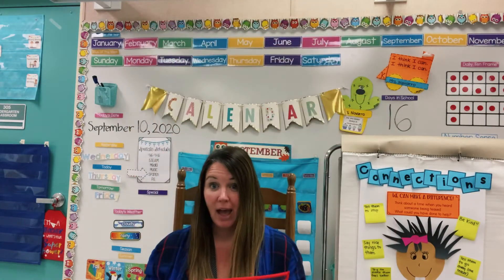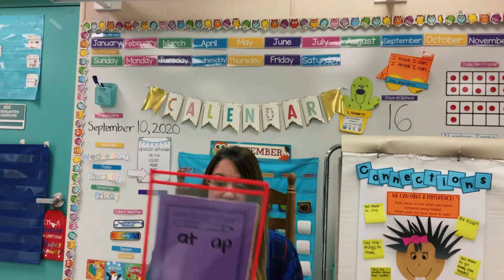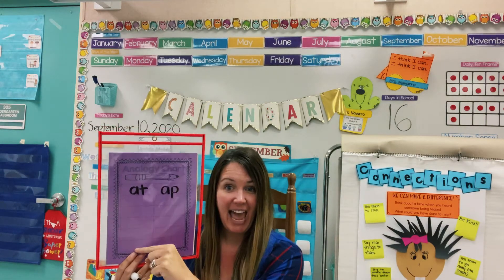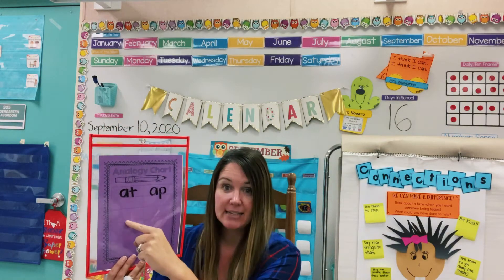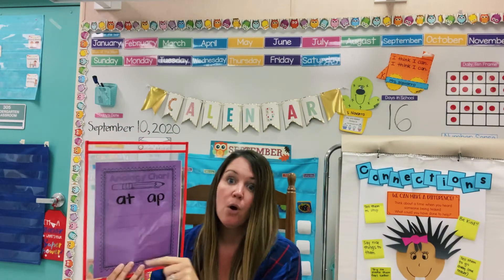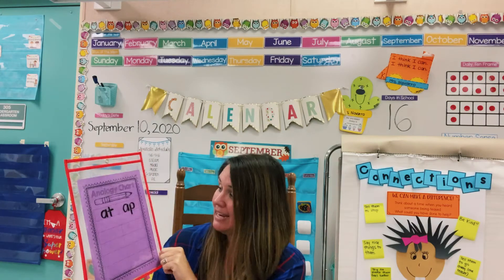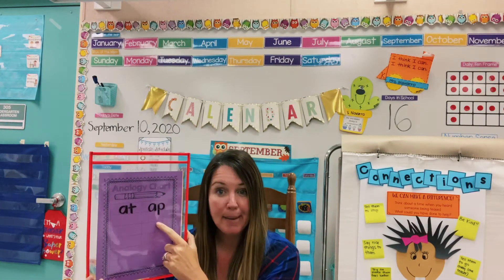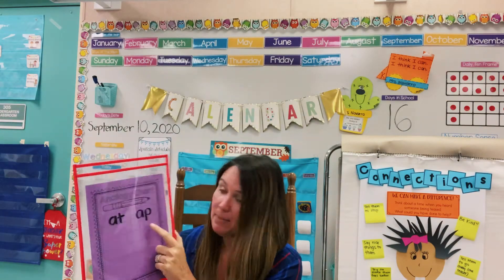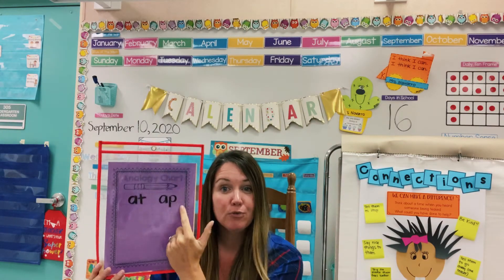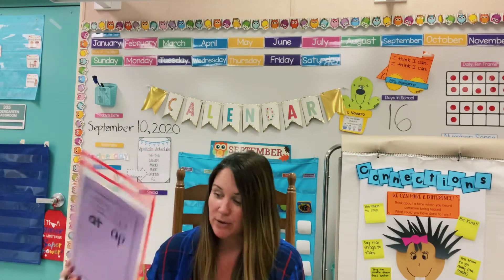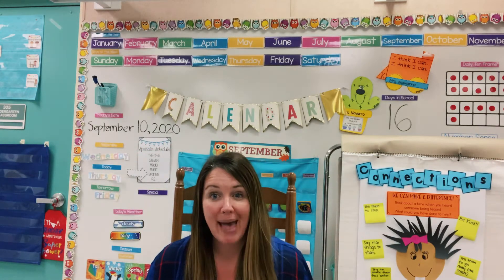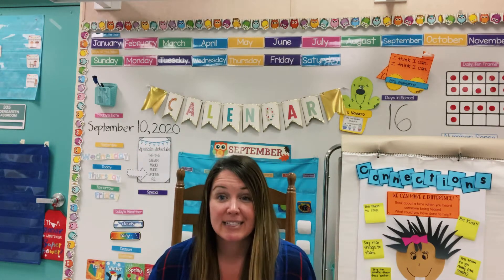I'm going to say a word and you're going to see if it has the same ending as 'at,' and then you will write it below. Or if it has the same ending as 'ap' and is in the word family of 'ap,' you'll write it over here. Let's see how you can do — you'll try your best to spell the words.